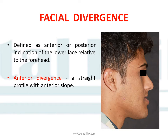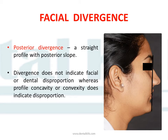Facial divergence is defined as the anterior or posterior inclination of the lower face relative to the forehead. We can have either anterior divergence or posterior divergence. Anterior divergence is a straight profile with an anterior slope, and posterior divergence is a straight profile with a posterior slope. Importantly, divergence does not indicate any facial or dental disproportion, whereas a profile concavity or convexity does indicate disproportion.